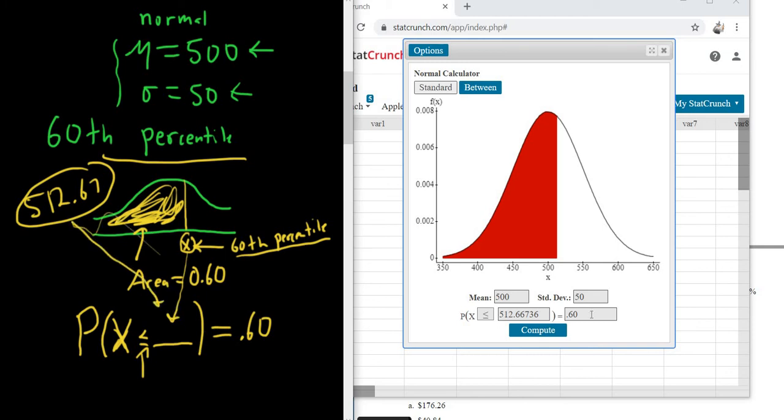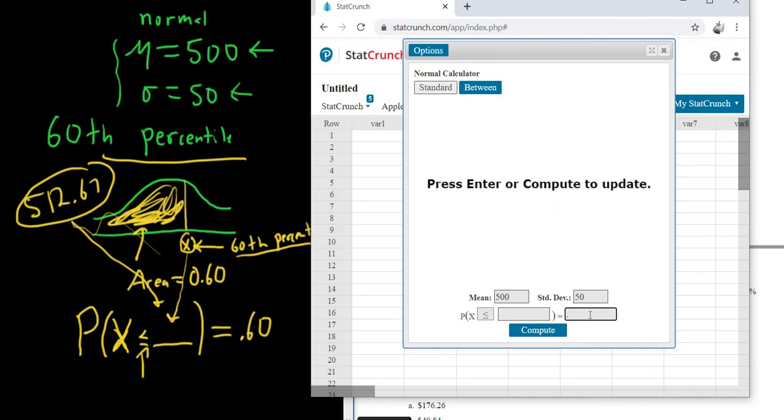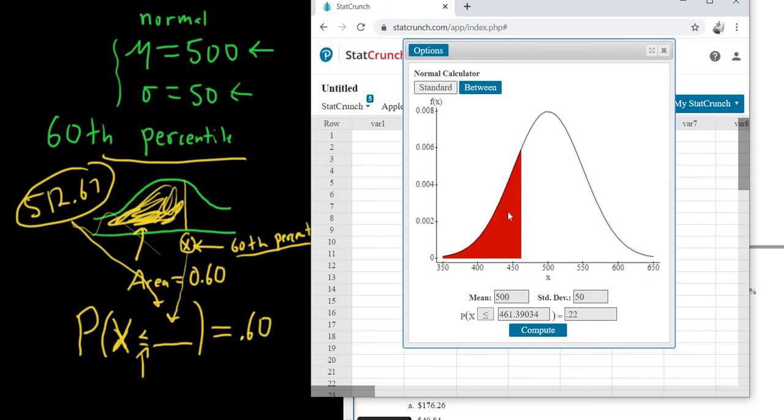So if it was the 22nd percentile, you would just go over here and type in 0.22. Click Compute. And you see it makes sense. Graphically, only 22% is to the left of the 22nd percentile, which is 461.